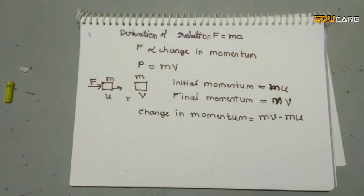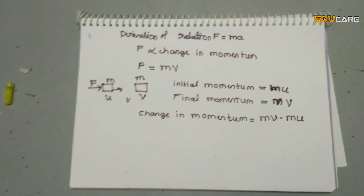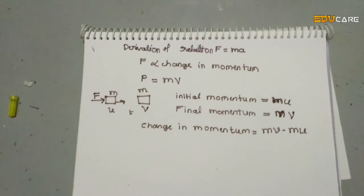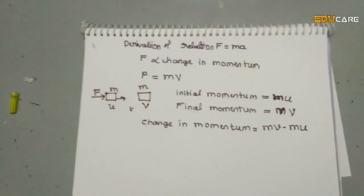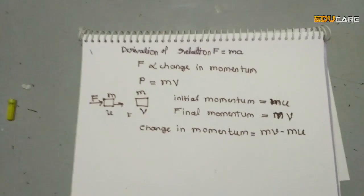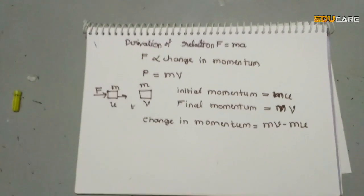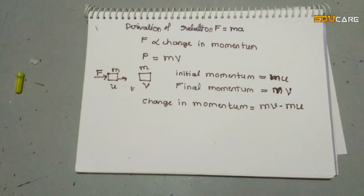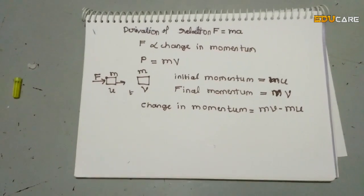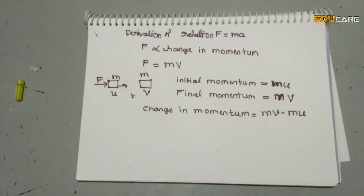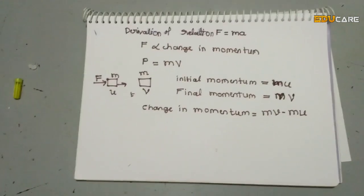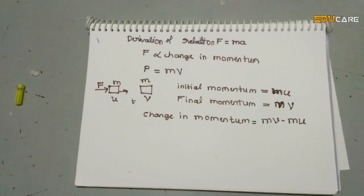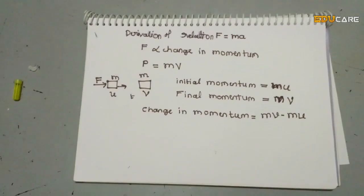The rate of change of momentum is the change in momentum divided by time. The rate of change of momentum is given by m into v minus m into u, divided by t.